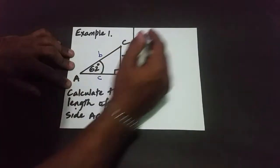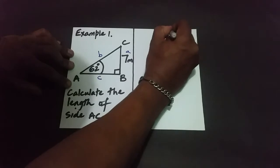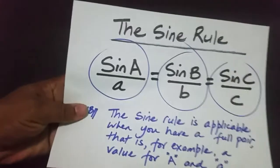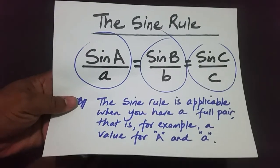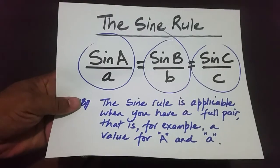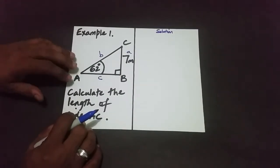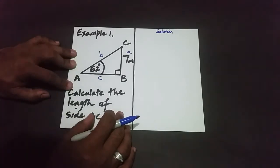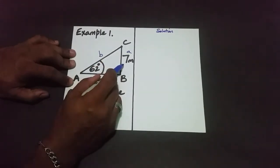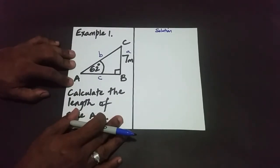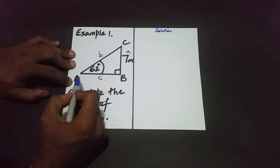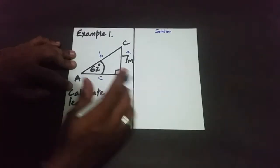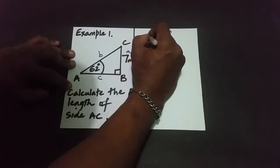Now we determine which two correct pairs to use. We need a full pair first. We have big A which is 62 degrees and little a which is 7 — that is our full pair. If we didn't have a full pair we wouldn't be able to use the sine rule. So the full pair available to us is the pair involving A.